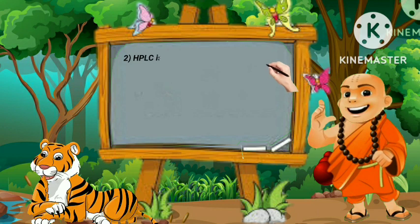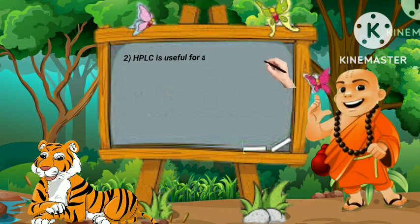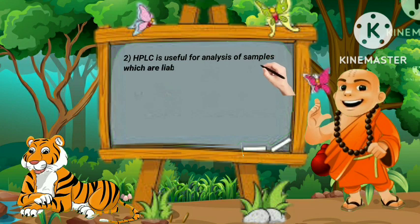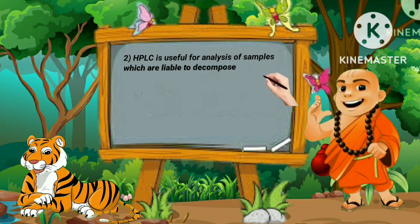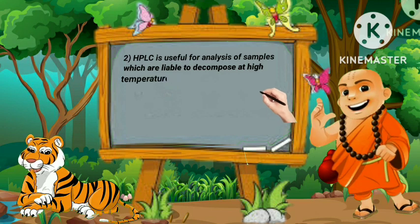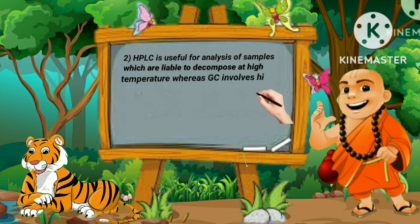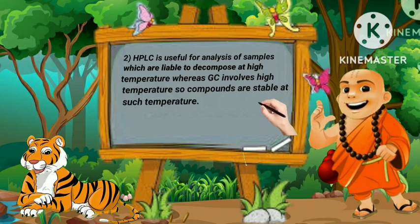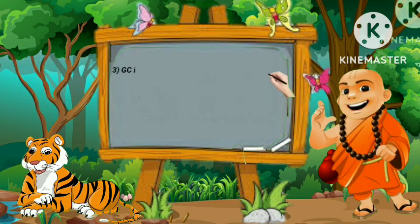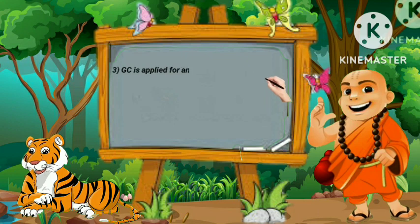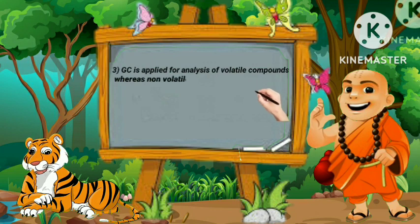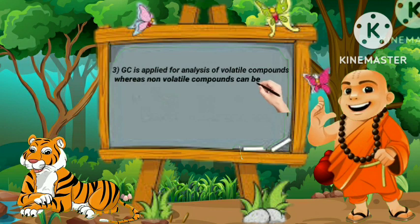Second, HPLC is useful for analysis of samples which are liable to decompose at high temperature, whereas GC involves high temperature, so compounds must be stable at such temperatures. Third, GC is applied for analysis of volatile compounds, whereas non-volatile compounds can be easily analyzed on HPLC.